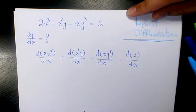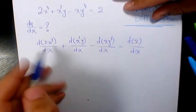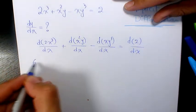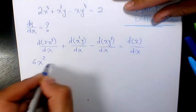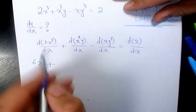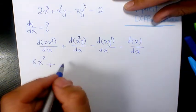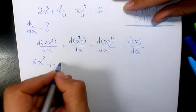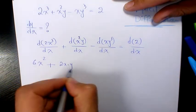The derivative is going to be 6x² plus, for x²y we need to use the product rule. It's going to be the derivative of x² which is 2x times y, plus x² times the derivative of y which is dy/dx.